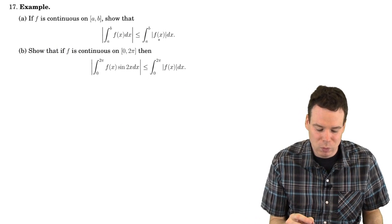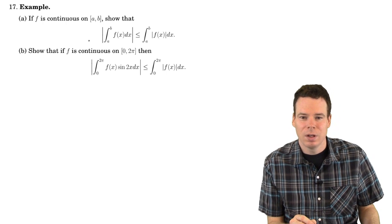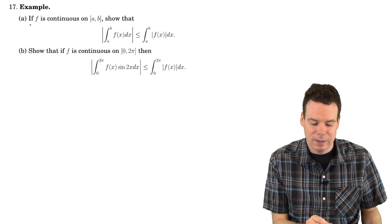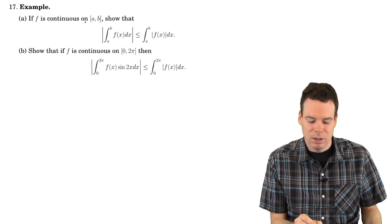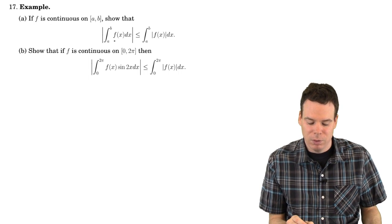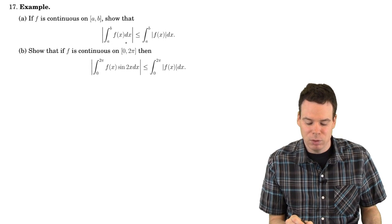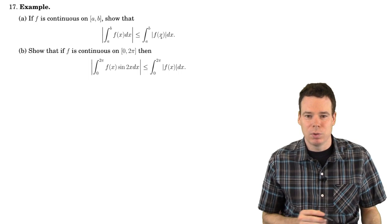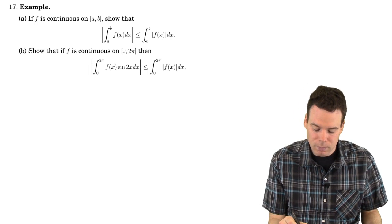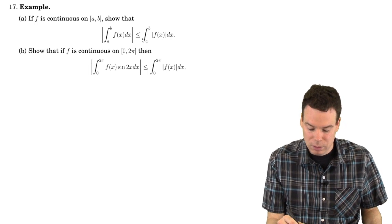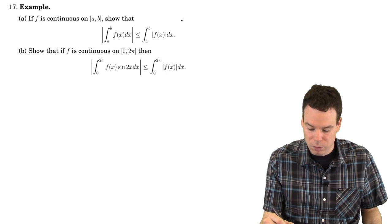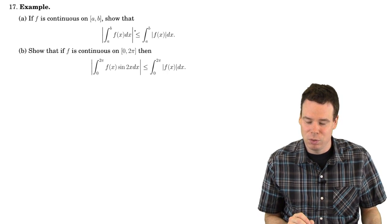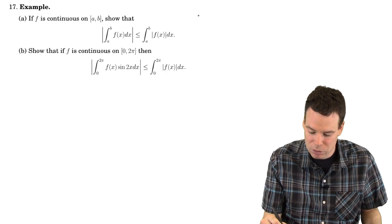In this last example we want to show how those properties of the integrals can apply to more theoretical questions. We have that f is a continuous function on the interval [a, b] and we want to show that the absolute value of the integral is less than or equal to the integral of the absolute value function. Let's just take a quick look at why this should seem intuitively true based on a picture.